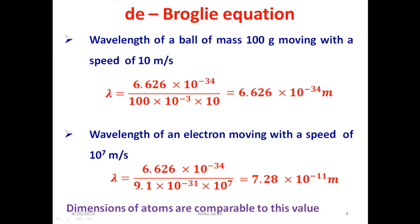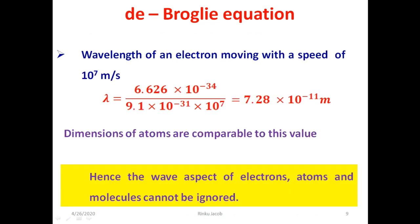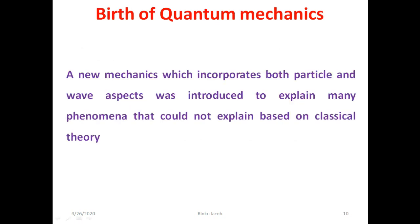The size of this wave is very small. Now we calculate the wavelength of the matter wave associated with an electron moving with a speed of 10⁷ meters per second. We get 7.28 × 10⁻¹¹ meters, which is comparable to the dimensions of atoms. From this comparison it is clear that the wave aspects of atomic and subatomic particles like electrons, neutrons, and protons cannot be ignored. So a new mechanics incorporating both particle and wave aspects was introduced to explain phenomena that could not be explained by classical theory.